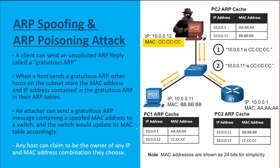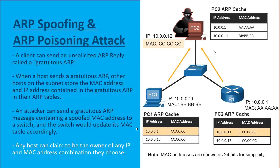Also, the threat actor PC2 sends out a gratuitous ARP claiming that 10.0.0.11 — the IP address of PC1 — is reachable with MAC address all-C's, which is again the attacker. So when PC1 sends data to the 10.0.0.1 IP address, it'll be sending it at layer 2 to the attacker. When the attacker receives this data, it'll be using it as a man-in-the-middle attack. When the router responds to 10.0.0.11, it will be responding to the layer 2 target — MAC address all-C's — which again is the threat actor.